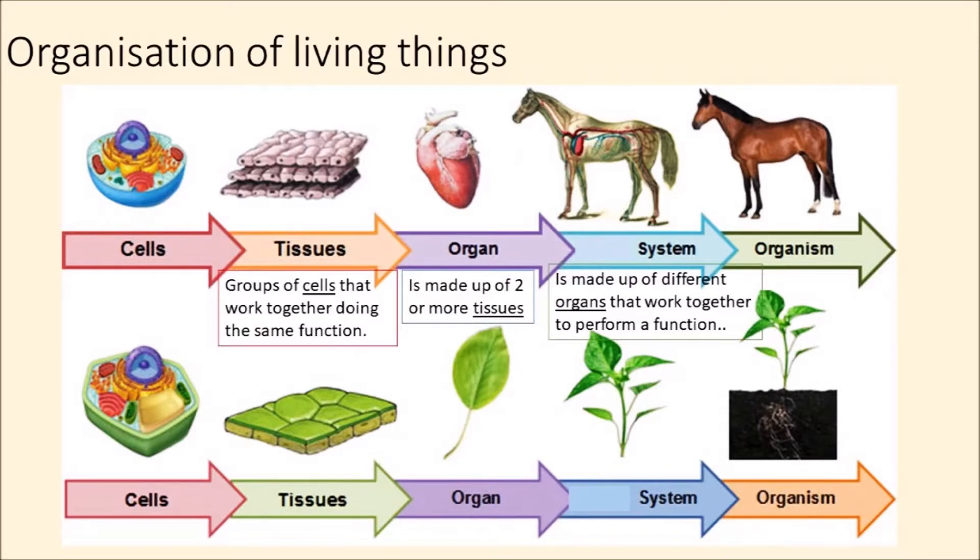We have learned that all living things are made up of tiny cells. Cells are the smallest structural and functional unit responsible for the working of the entire body. Different types of cells combine to form tissues, tissues combine to form organs, organs combine to form systems, and organ systems combine to form an organism. So cell is the smallest unit of life, but today we will be learning about much smaller things apart from cells.